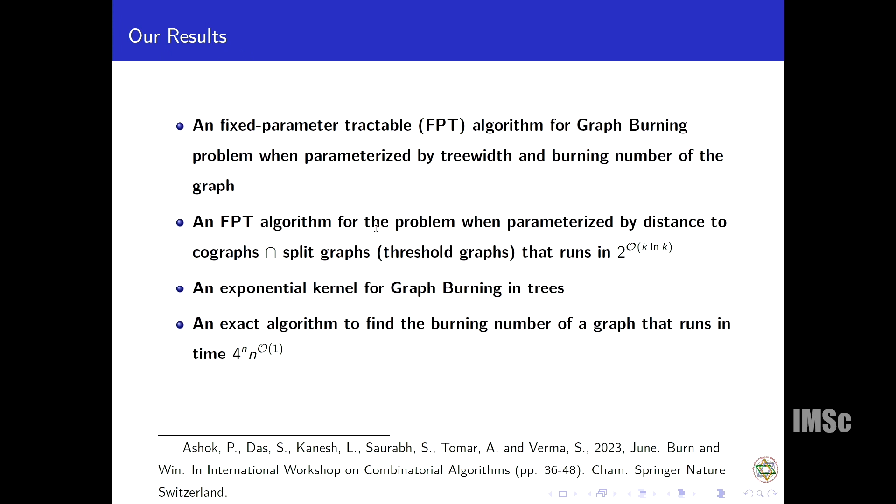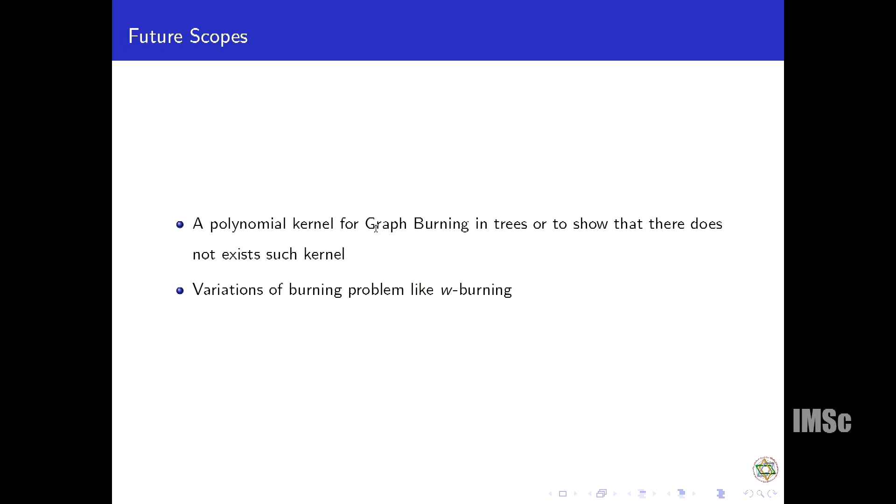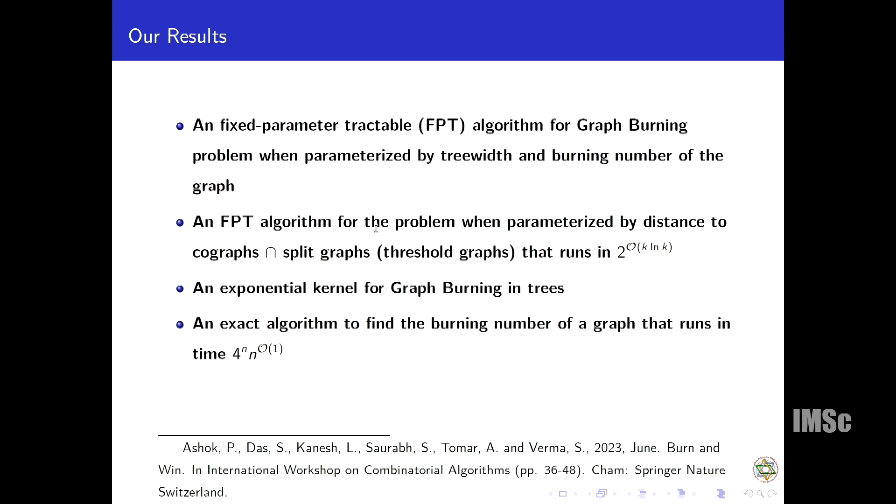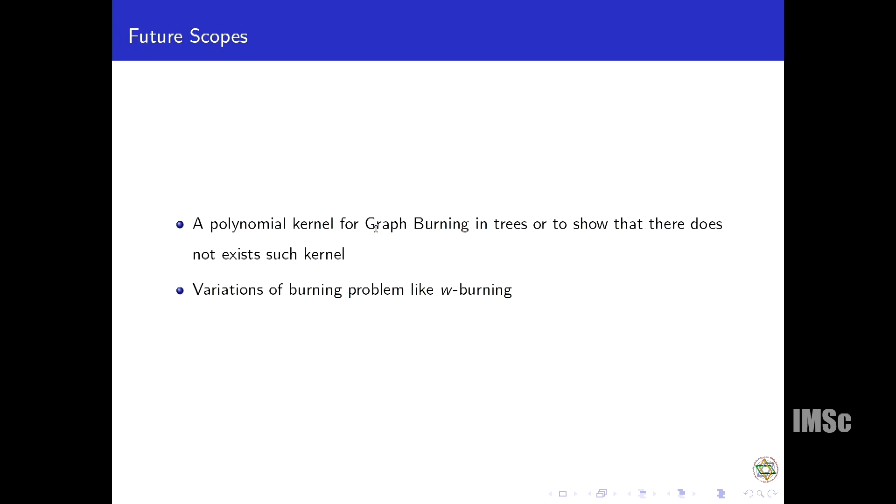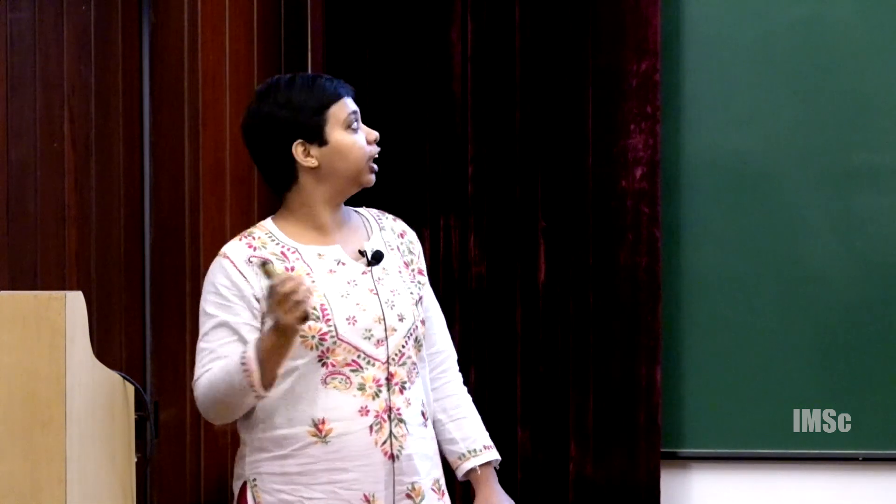These are the future scopes. Since we have shown that there is exponential kernel for graph burning, it is open whether there is a polynomial kernel or if we can prove that there is no polynomial kernel. We can also work on some variations of burning like w-burning, where instead of one vertex, at each step we can put fire to at most w vertices for some integer w. With that I will end my talk. Thank you.